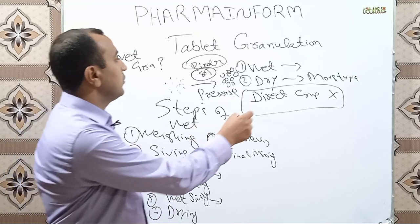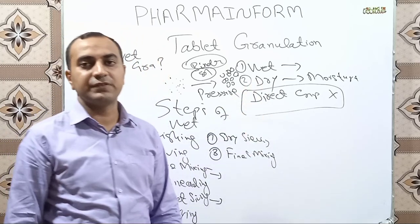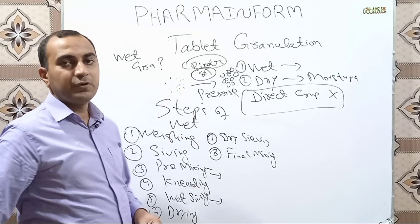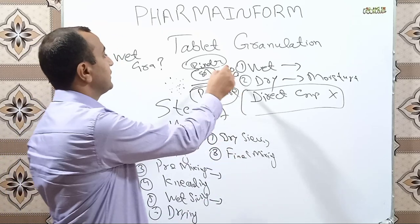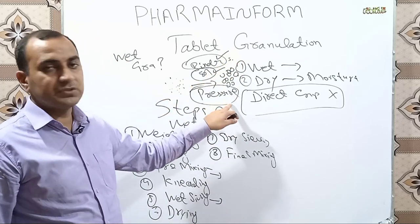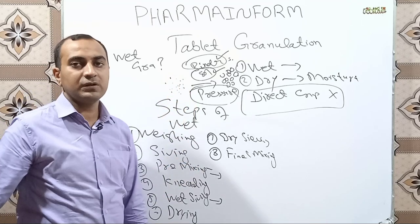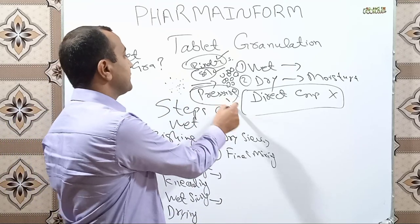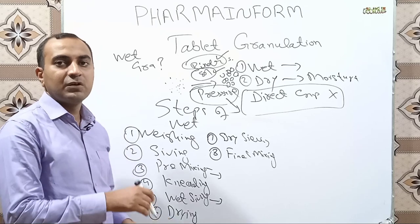Now the next type is dry granulation. Dry granulation is the process in which we convert fine powder particles into granules by the application of pressure. The main difference is that in wet granulation we use binder solution or solvent, but in dry granulation our products are moisture sensitive and heat sensitive, so we use pressure instead. Two methods are used: slugging and roller compactor or chilsonator.